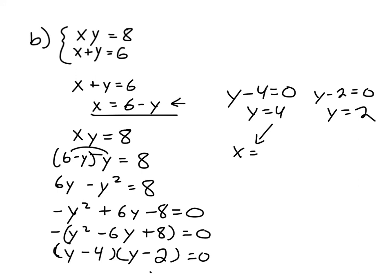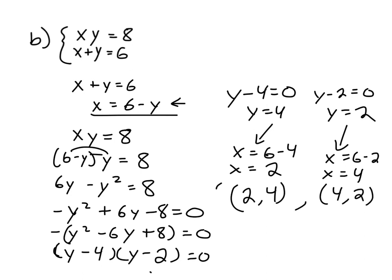And then find the corresponding values of x using this equation here. So x equals 6 minus 4, so that would be 2. And then for this one, x equals 6 minus 2, which is 4. So your two points: this one's x is 2, y is 4. And this one, x is 4, y is 2. And this is your solution for this system of nonlinear equations.